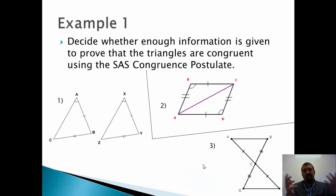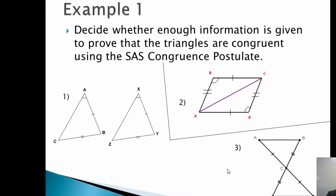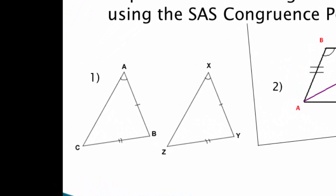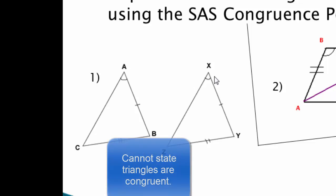First example: given a bunch of pictures, decide whether enough information is given to prove the triangles are congruent using the Side, Angle, Side congruence. Number one — I would say no. Why? It goes Side, Side, Angle — Side, Side, Angle. That might be one we eventually learn about, but it's not Side, Angle, Side, and it's not Side, Side, Side, and those are the only two I know. So it doesn't fall into anything I know — I can't prove it.